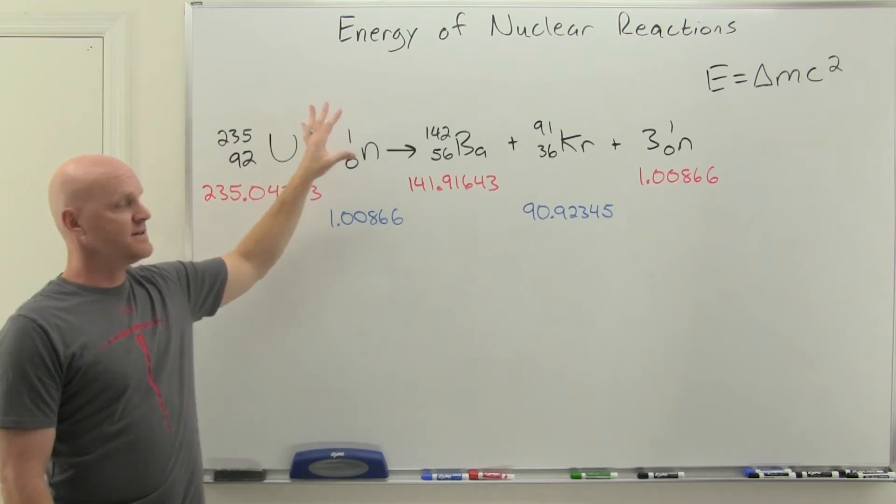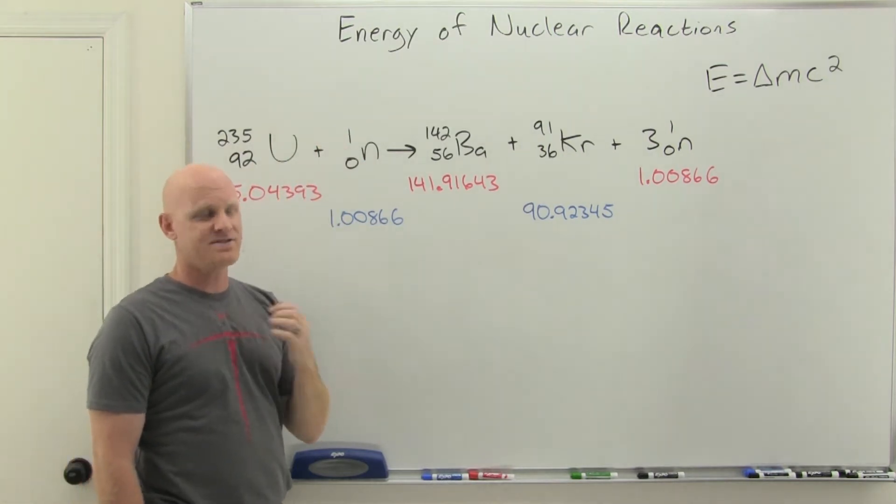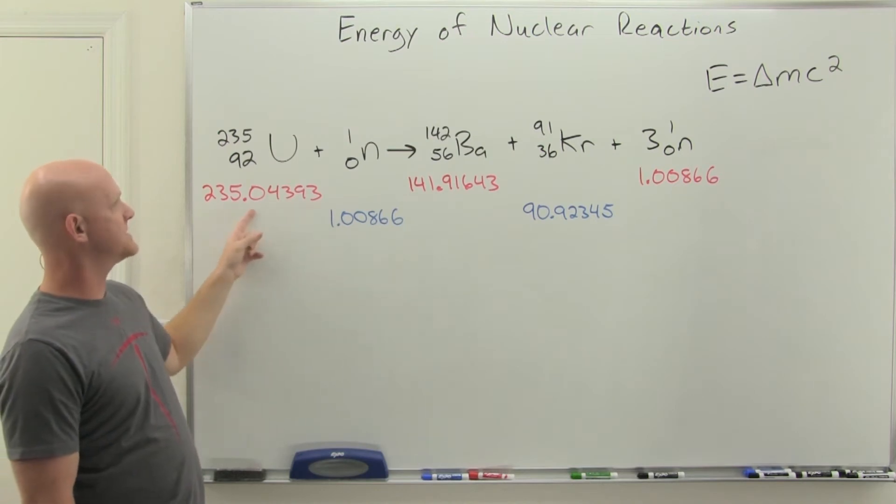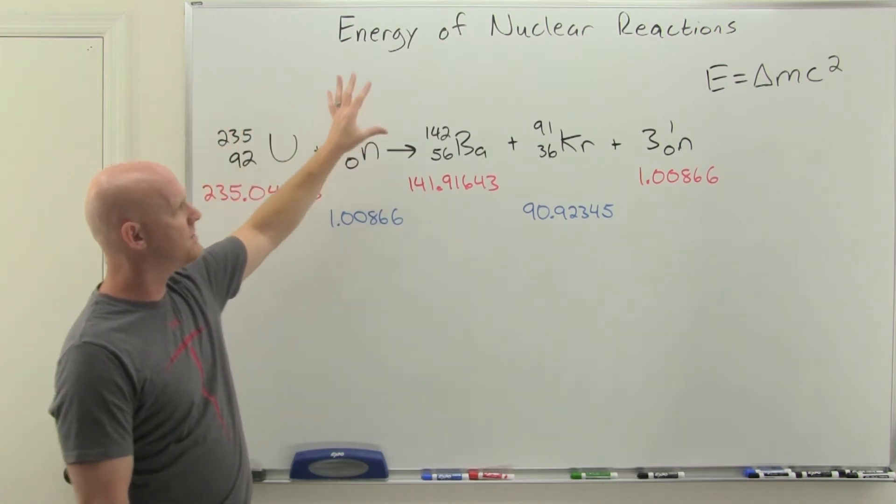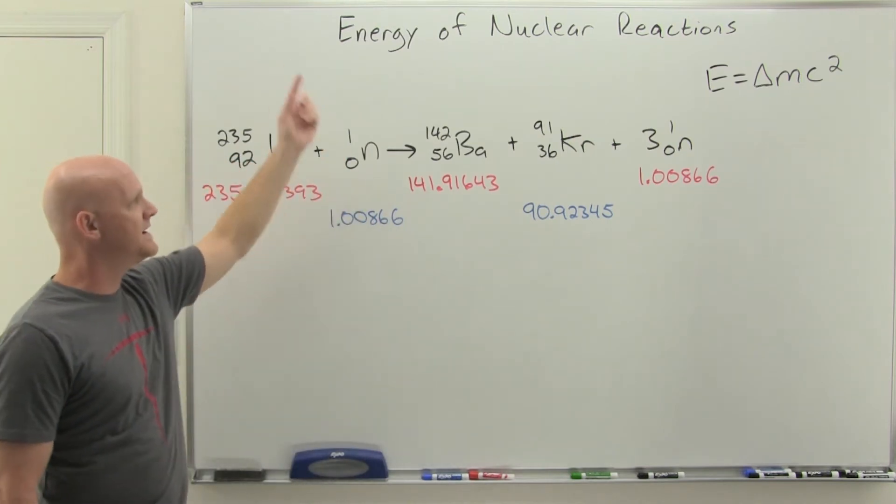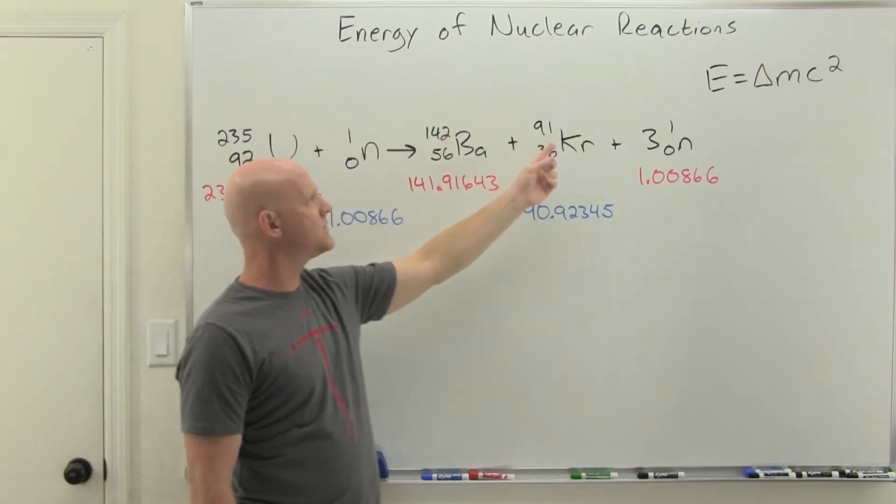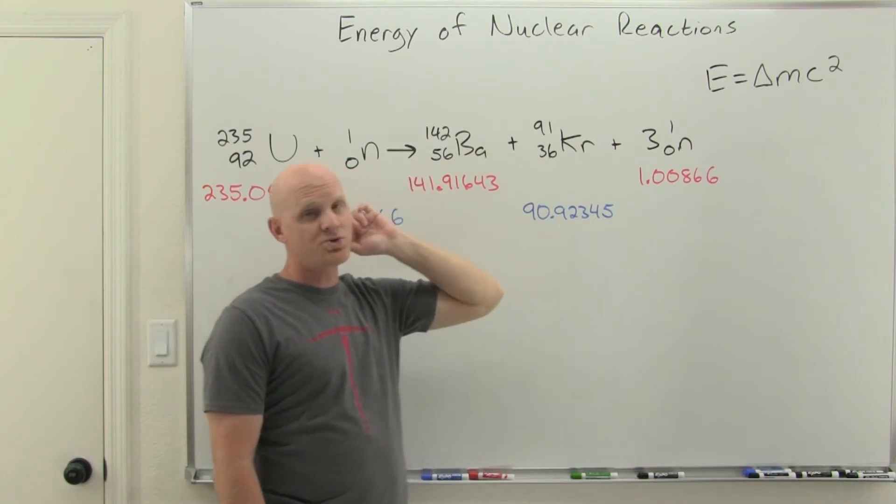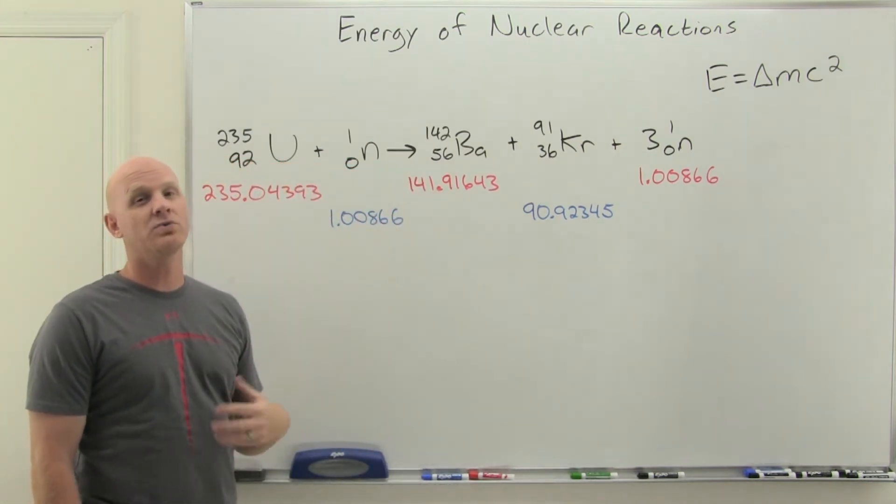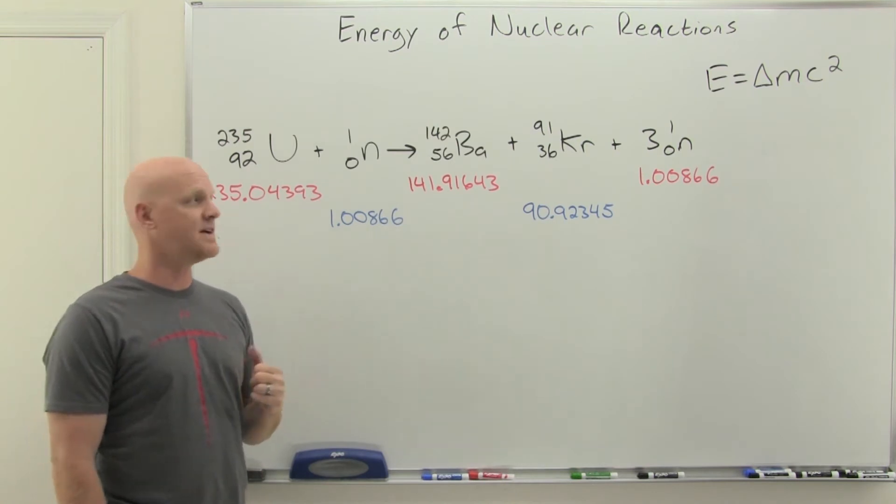We're going to look back at the fission reaction we studied in the last lesson. Here I've got the exact mass out to five decimal places of everything involved in this fission of uranium-235. We're going to bombard it with a neutron; it's going to produce barium-142, krypton-91, and three neutrons. With the exact mass in AMUs of all these particles, we can figure out what that mass defect is and calculate how much energy that works out to be.